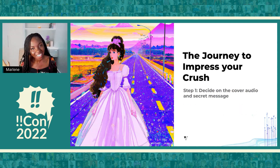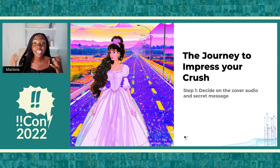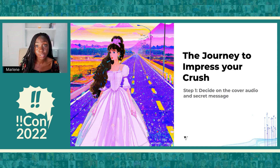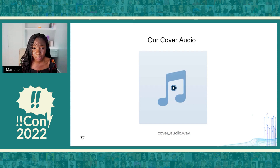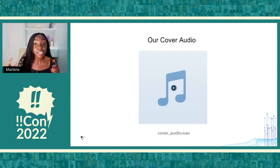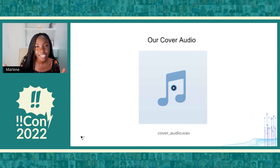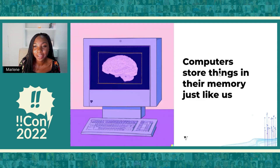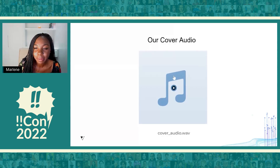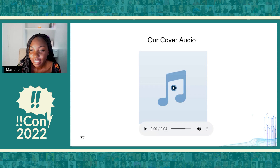As we start this magical journey of trying to impress our crush, the first step is to create a sound file that will contain the message. We also need to decide what the secret message is going to be. Before this talk, I recorded an audio message and saved it to my laptop as a .wav file. This is going to be our cover audio that will contain our secret text message — there's nothing particularly special about the file. Let me try and play it for you so you know it's a normal audio clip.